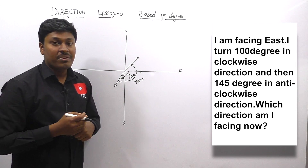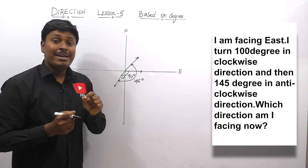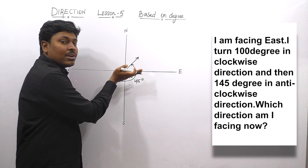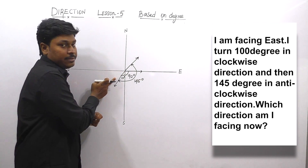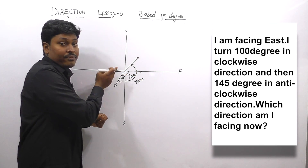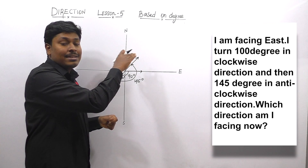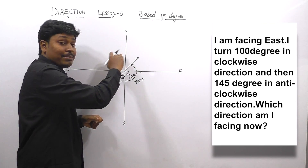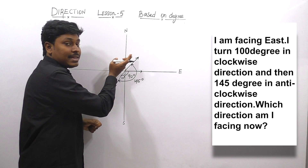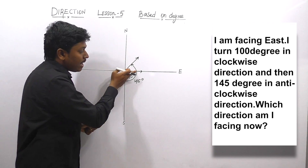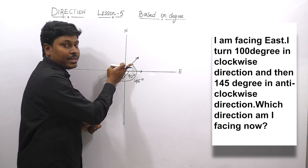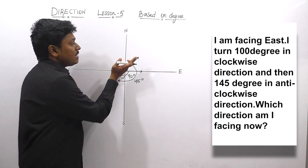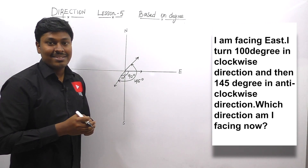Finally, we got northeast for question number 2. The major thing is: first, a person is facing east and turns clockwise 100° — that is 90 plus 10. From here, the person again turns anti-clockwise 145°. Anti-clockwise will be this side, turning 145°: this will be 100° and this will be 45°. So the total angle is 145°, and finally the person is facing northeast direction.